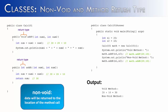Therefore the program would be done, and our output would be 'void method 20 plus 10 equals 30' — and our non-void method would say absolutely nothing. This is a common error when first learning non-void methods. The way that we would fix that is to simply wrap a System.out.println around the method call. So the method call would bring back 30.